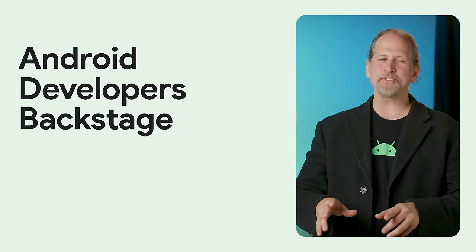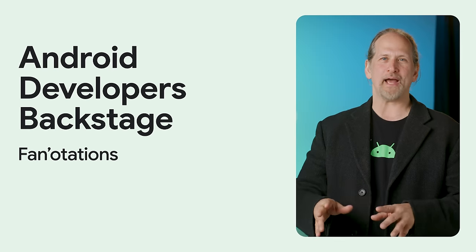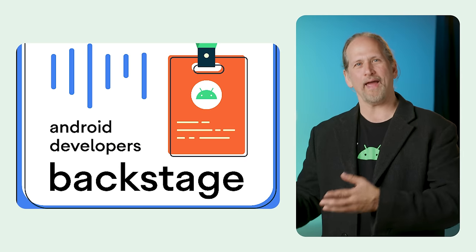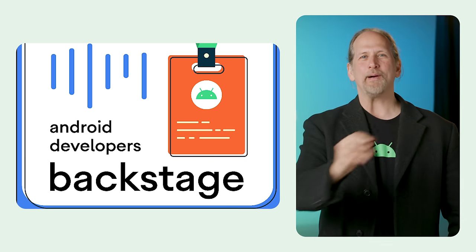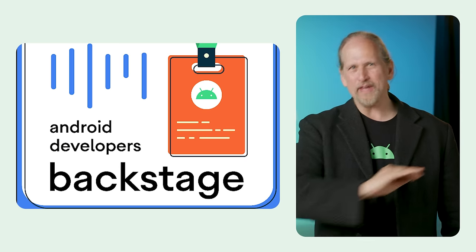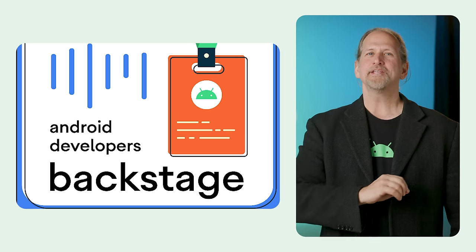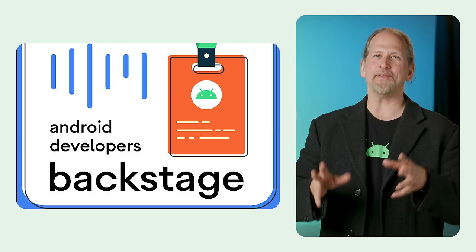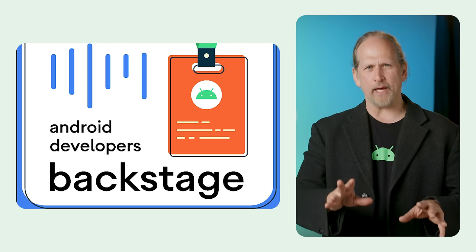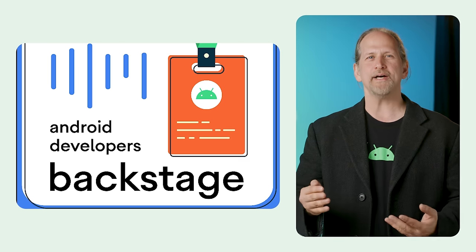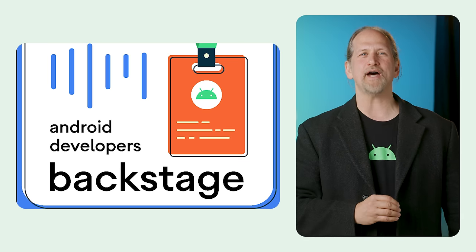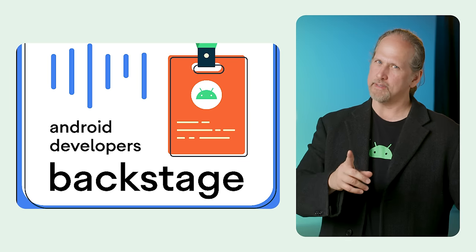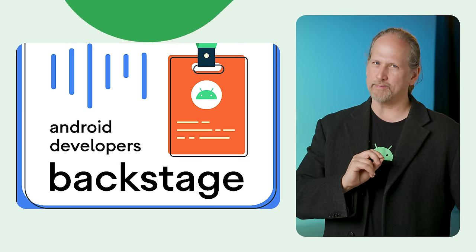In episode 204 of Android Developers Backstage, fan notations, Tor, Romain, and Chet talk about one of Tor's favorite topics: Lint. Specifically, they talk about Lint checks and the annotations that use them to enable better, more robust, and more self-documenting APIs. As Chet would say, Lint is not just for pockets anymore.